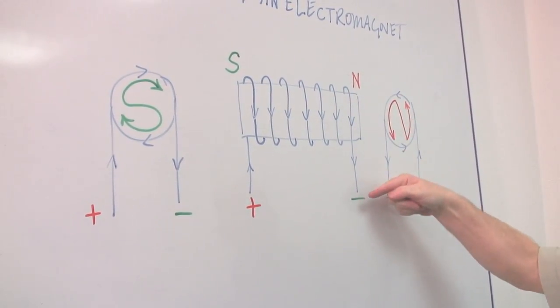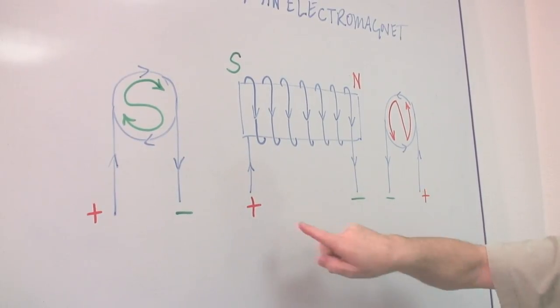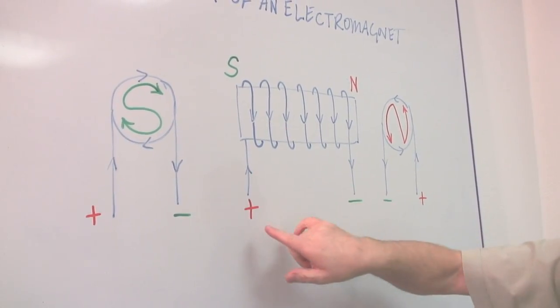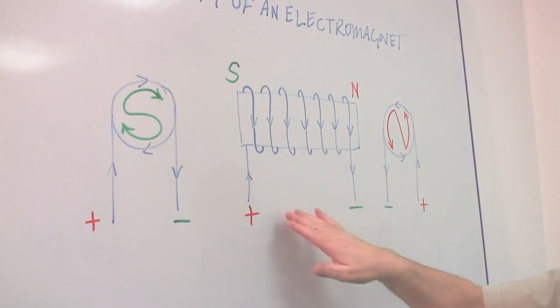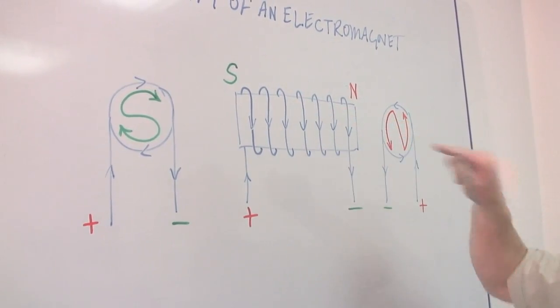And here of course, it's going that way. So this is the positive end. You attach your plus to the battery there and your minus to the battery there. Okay, so we've got a current flowing through this coil.